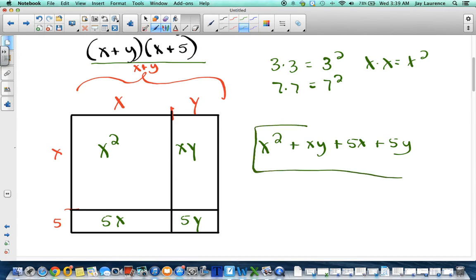That is the product of multiplying x plus y. The quantity of x plus y times the quantity of x plus 5. There it is. It's pretty simple. Now, some of you might notice, hey, that there's common things. Maybe use the distributive property. Yeah, you could. Absolutely.